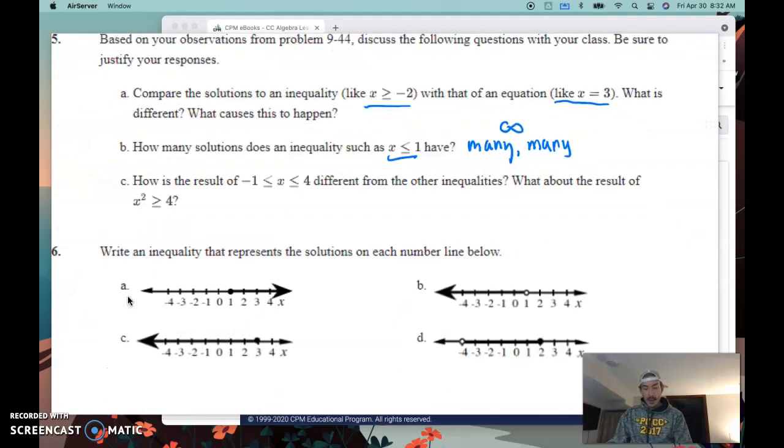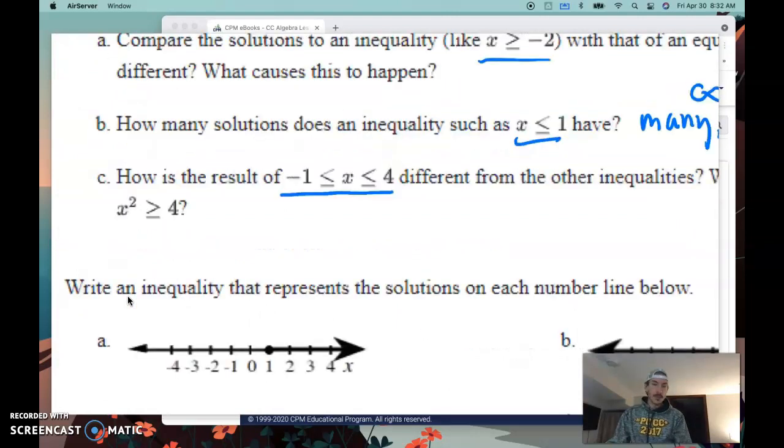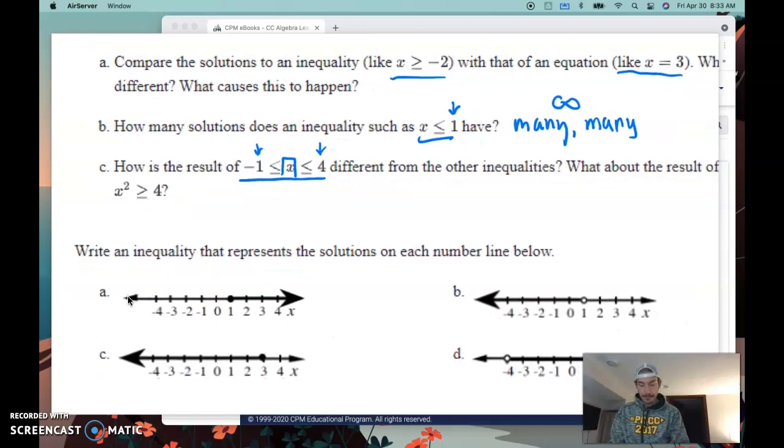In part C, you have a compound inequality. We're talking in this case about all of the numbers, all the ways for x to vary in between negative 1 and positive 4. Holy cow, there's tons of numbers in there. There's the integers negative 1, 0, 1, 2, 3, and 4, and there's also all those decimals, all those fractions. And how many is that? Tons. But you see how that's different. It's got a bound on both ends.